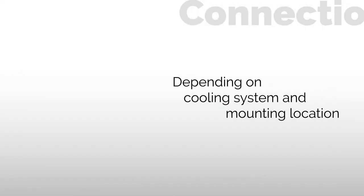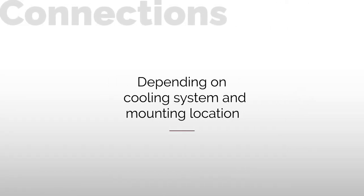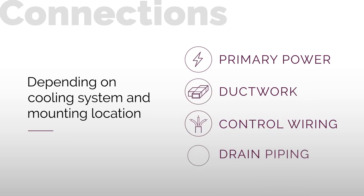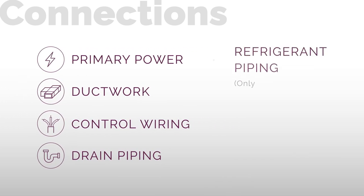Depending on the type of cooling system and mounting location, you'll need connections for primary power, ductwork, control wiring, drain piping, and for split systems, refrigerant piping.